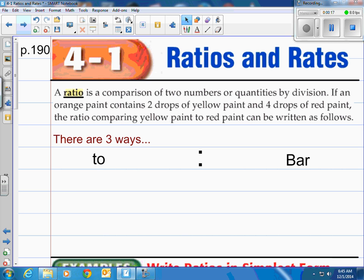So again we're talking about ratios and rates. First thing we'll talk about is a ratio. A ratio is a comparison of two numbers or quantities by division. If an orange paint contains two drops of yellow paint and four drops of red paint, the ratio comparing yellow paint to red paint can be written as follows.